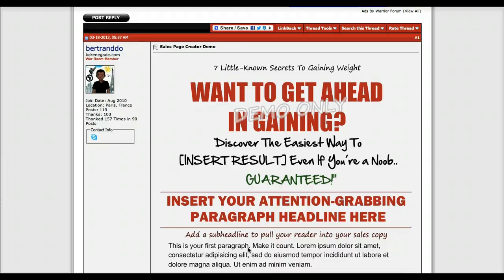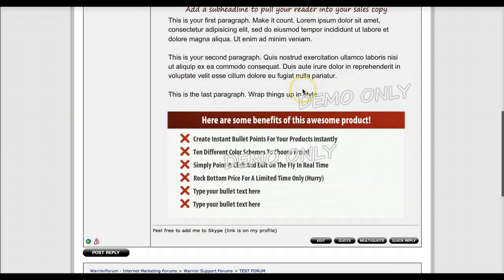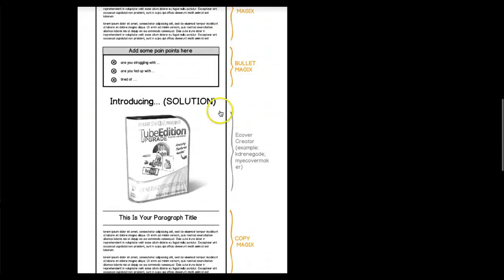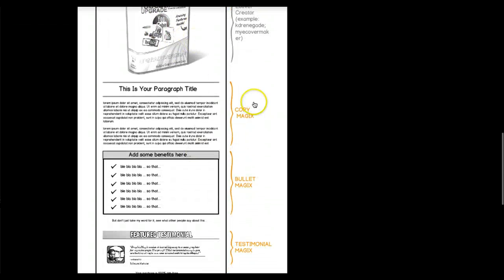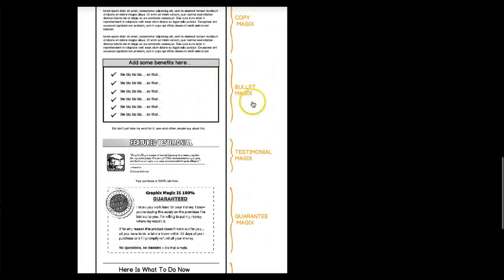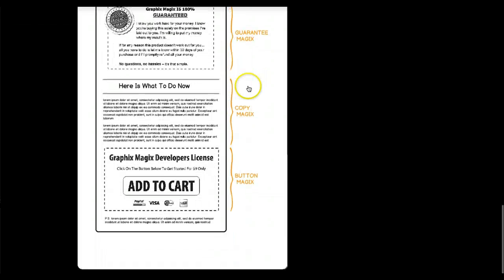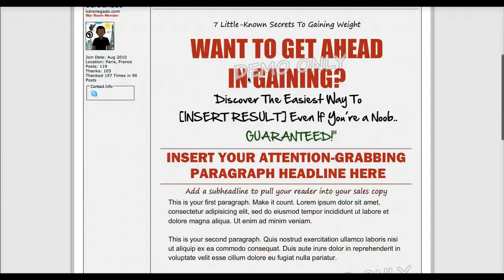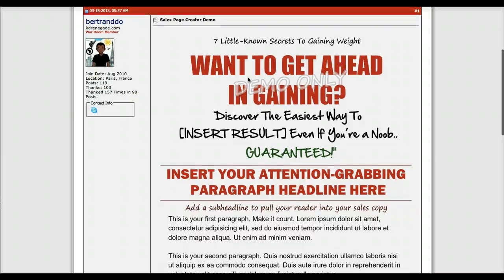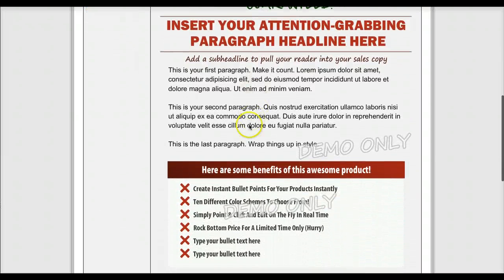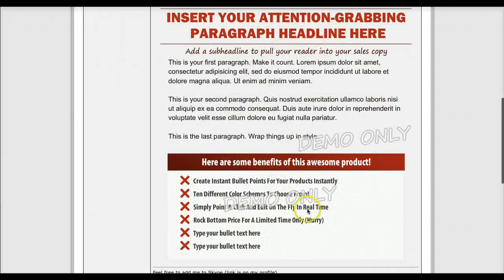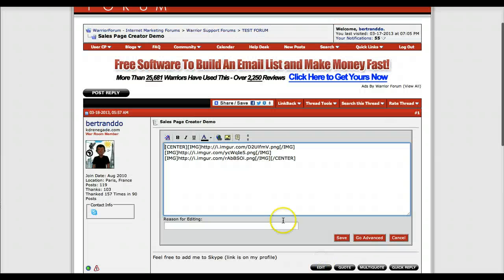I click 'Submit New Thread' and here we go — I get my headline, my copy, and my bullet points. Following the blueprint, next I would add my product image, then another paragraph about the product, then more benefit bullet points, testimonials, a guarantee, a call to action, and a button. It's pretty easy to populate the sales page this way without much manual formatting.